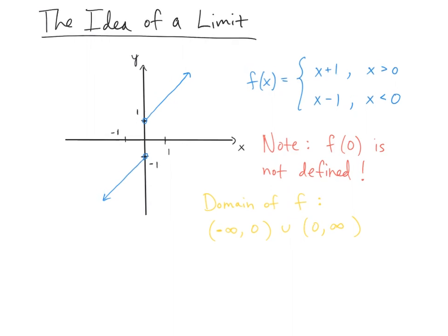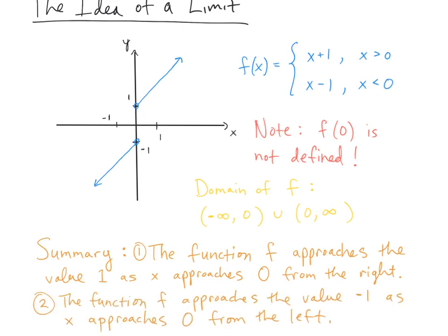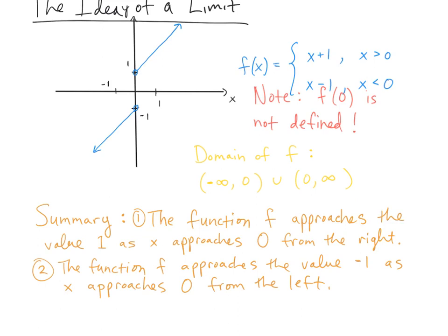Let me summarize. The first point is that the function f approaches the value 1 as x approaches 0 from the right. Even though the function is not defined at 0, as x approaches 0 from the right, you're approaching that value of 1. The second point is that the function f approaches the value negative 1 as x approaches 0 from the left. As x approaches 0 from the left, the function values are tending to negative 1, even though the function is not defined at 0.